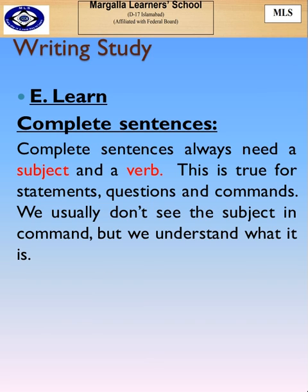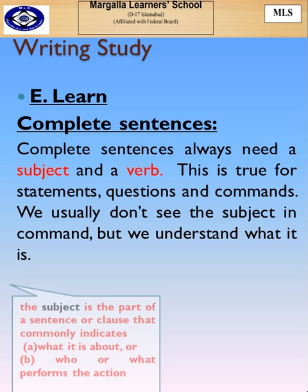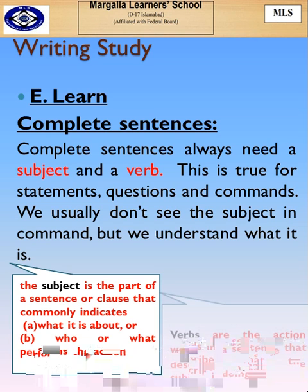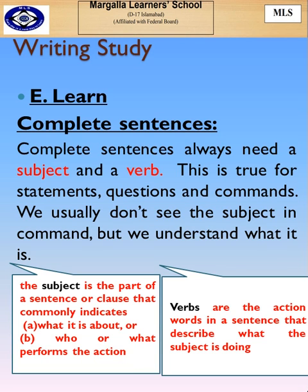Complete sentences. What are complete sentences? Complete sentences always need a subject and a verb. What is a subject? A subject is a part of a sentence or a clause that commonly indicates what it is about or performs the action in a sentence. Verb: verbs are the action words in a sentence that describe what the subject is doing.